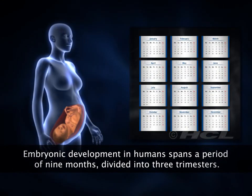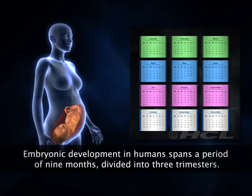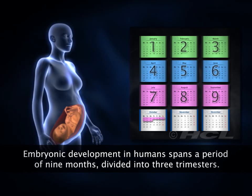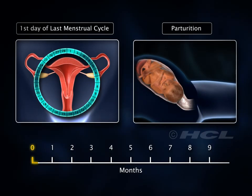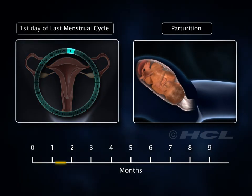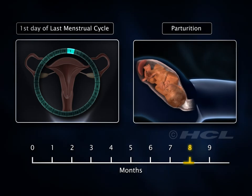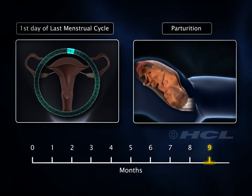Embryonic development in humans is divided into three trimesters, spanning a period of about 280 days or nine calendar months plus ten days. This period is counted from the first day of the last menstrual cycle until parturition and is called the gestation period.